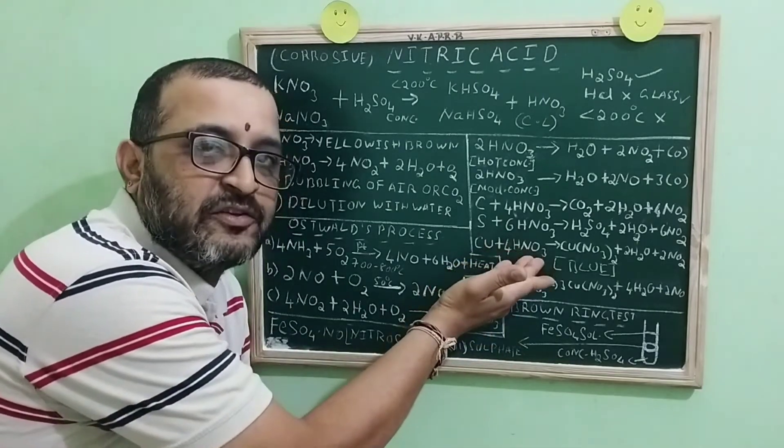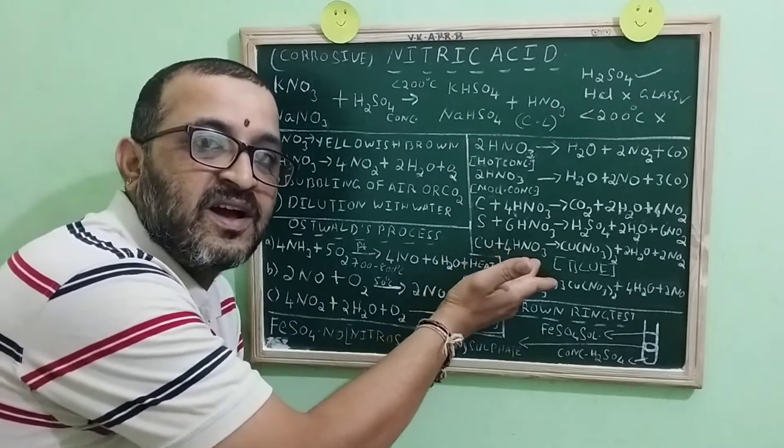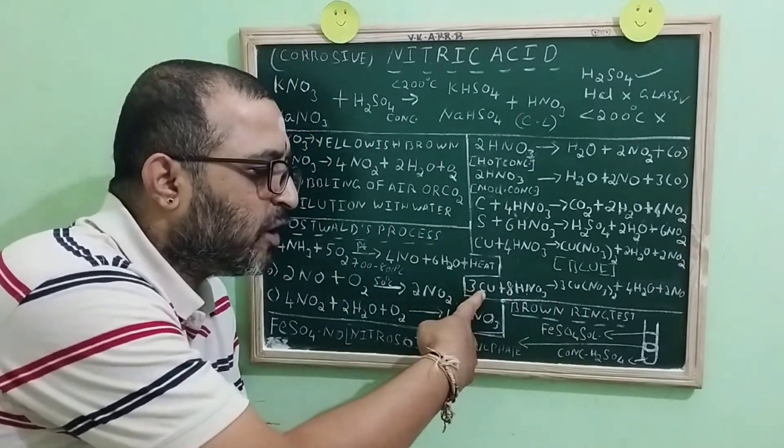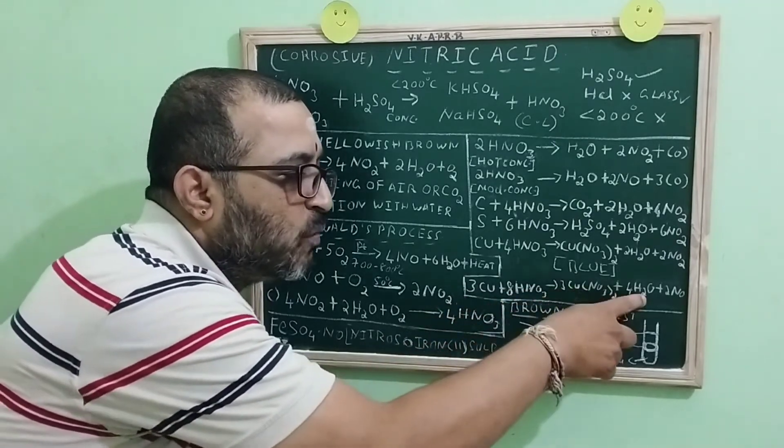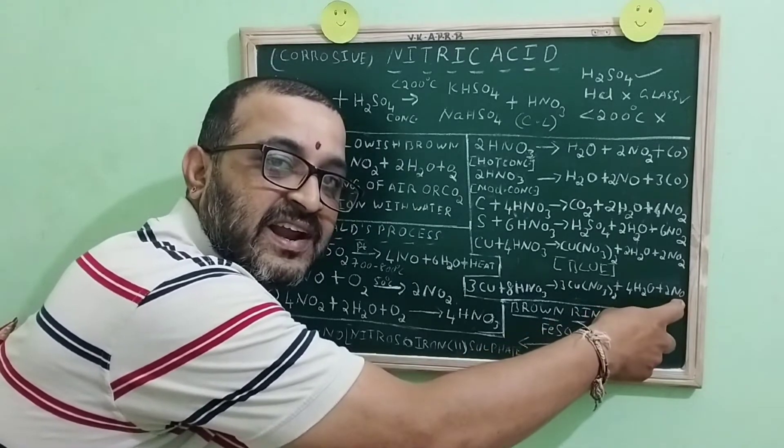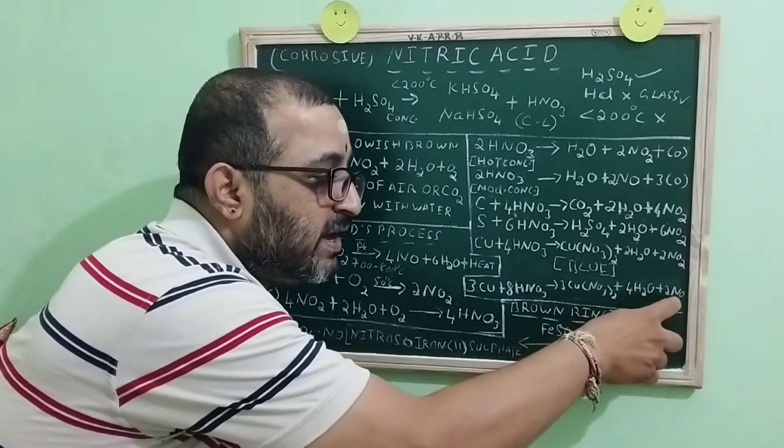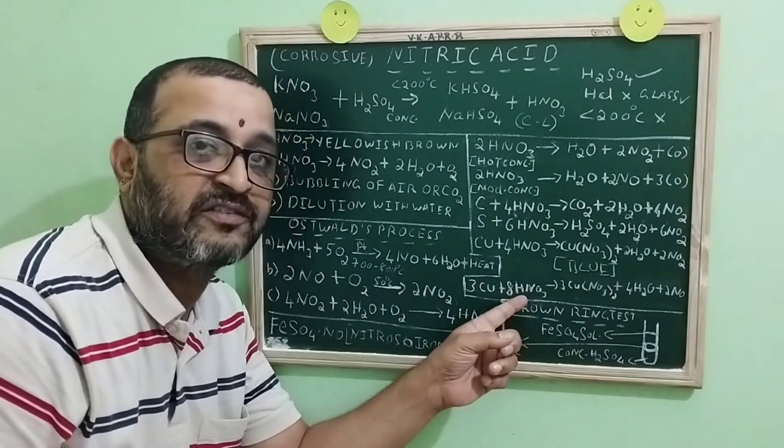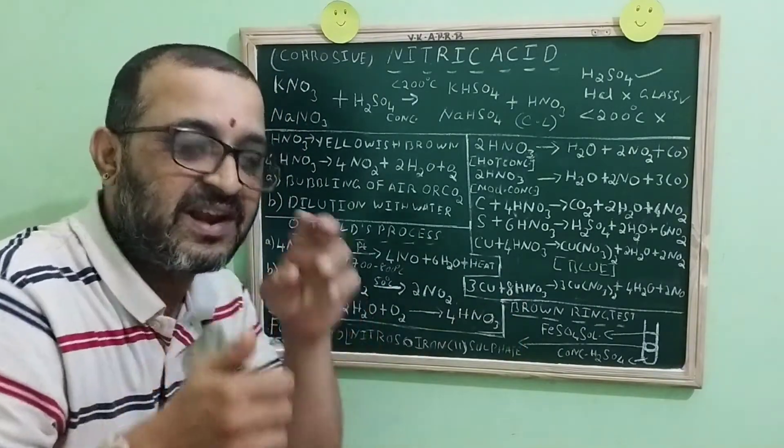Nitric acid uses which one? Hot concentrated or hot dilute. Copper can also be reacted with nitric acid again to get copper nitrate and water. And this time, it is nitric oxide, which is colorless, not nitrogen dioxide, which is reddish brown. Here, the reduced product is NO. Then the nitric acid used is cold dilute.